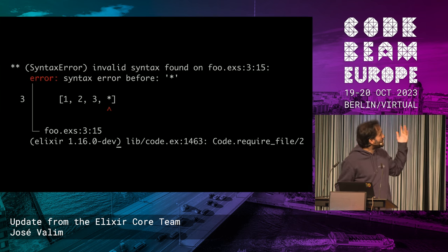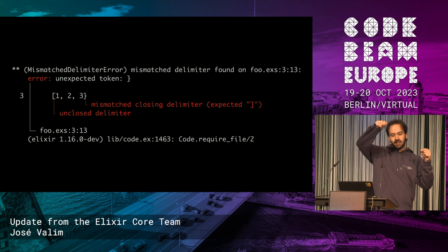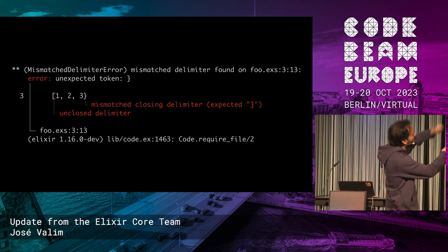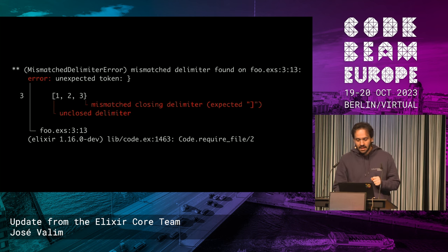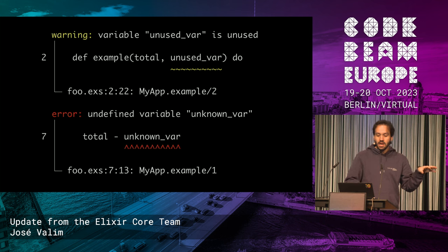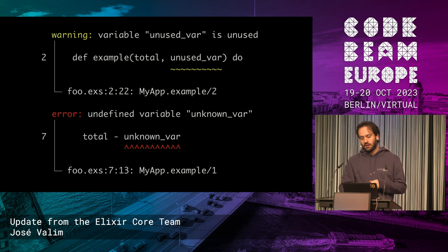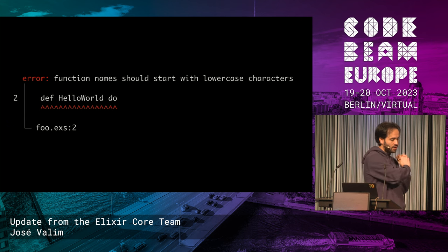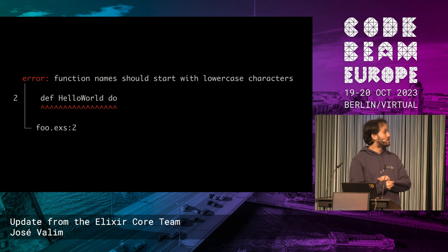The first is improved compiler diagnostics. In Elixir 1.16, when you get an exception, we now include a code snippet showing exactly where the error is — for example, a syntax error. For mismatched delimiters, we show exactly what was opened and what you forgot to close, across multiple lines if needed. Many compiler warnings and errors will now show snippets as well. If we have precise span information for a variable, we underline exactly that; otherwise we underline the whole thing. This was contributed by Vinicius Muller.